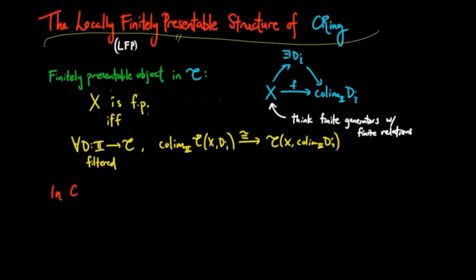So in the category of commutative rings, each finitely presentable object is isomorphic to some quotient ring of the polynomial ring over the integers with finite number of variables. This is because the polynomial ring is the free structure in the category of commutative rings.